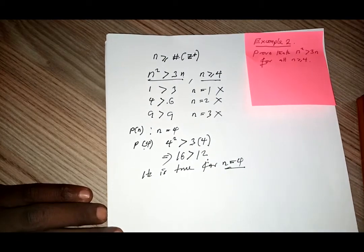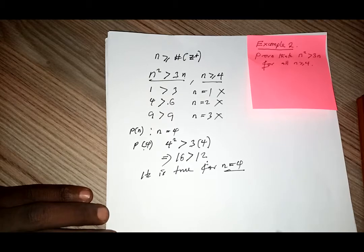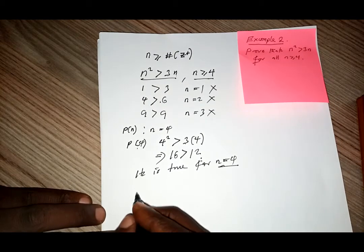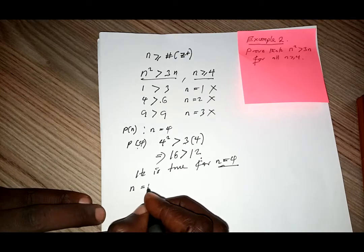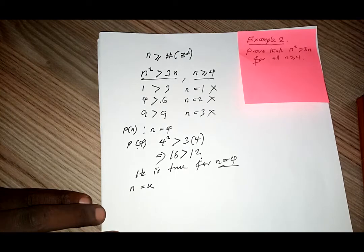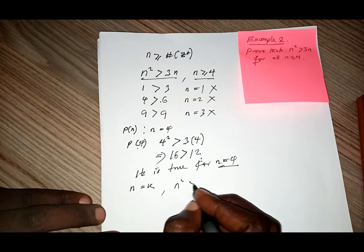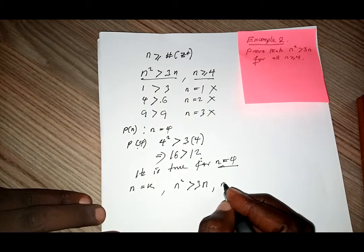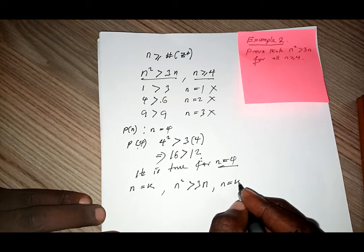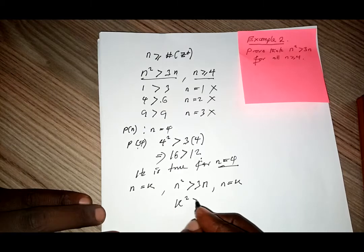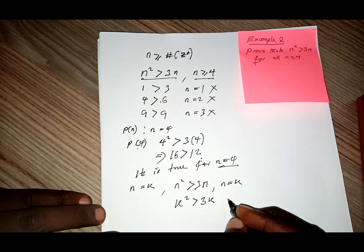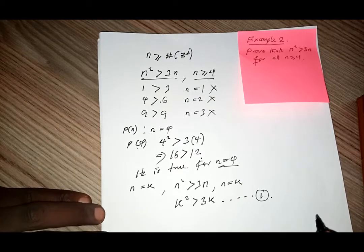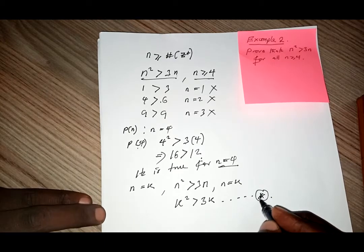Now we want to generalize this. We assume that it is true for some value other than 4. What if n is equal to k? Then we have n squared is greater than 3n, so if n is equal to k, this gives us k squared is greater than 3k. This is a very important condition where we are going to base our argument — I'll call it star.